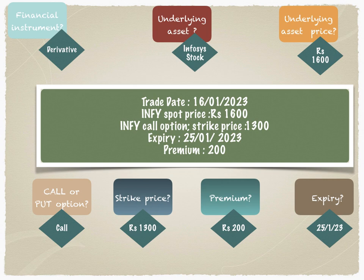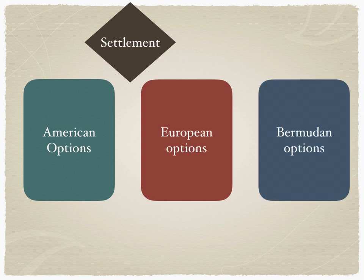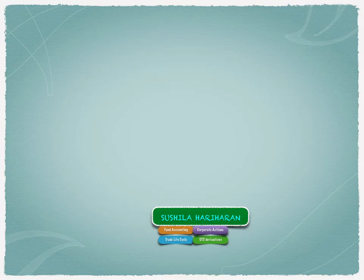On the basis of settlement, also called as expiry, we have three types of options: American options, which can be exercised any day prior to settlement; European options, which can be exercised only on the settlement date; and Bermudan options, which have set settlement dates but allow exercise at any time in between those settlement dates.